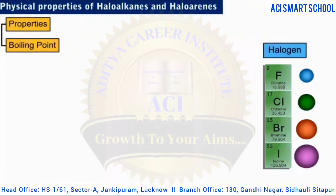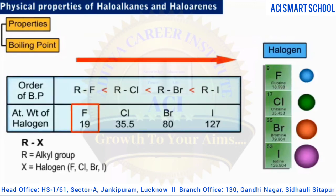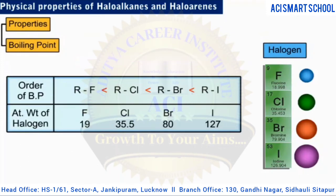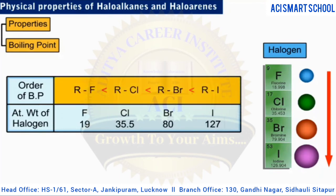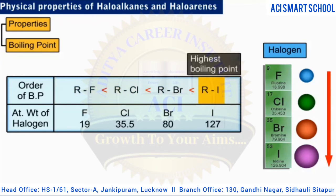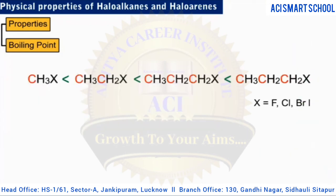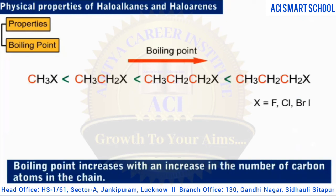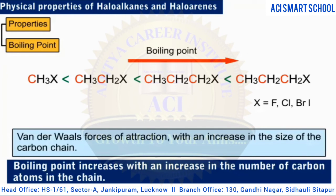For a given alkyl group, the boiling point increases with increasing atomic weight of the halogen. This is due to an increase in the magnitude of van der Waals forces of attraction with an increase in size and mass of the halogen atom. Thus, among alkyl halides, alkyl iodides have the highest and alkyl fluorides have the lowest boiling points. For a given halogen, the boiling point also increases with an increase in the number of carbon atoms in the chain, again due to increasing van der Waals forces.